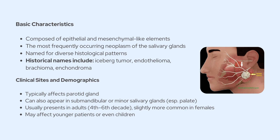Clinically speaking, pleomorphic adenomas tend to show up most often in the parotid gland, though they can definitely arise in any of the major salivary glands, and they can even appear in the minor glands, especially those on the palate. When the parotid is involved, a hallmark clinical sign is swelling in the parotid region that pushes the earlobe upward. It usually presents in adults between their fourth and sixth decades of life, though younger patients and even children can be affected. There's also a slight female predominance.